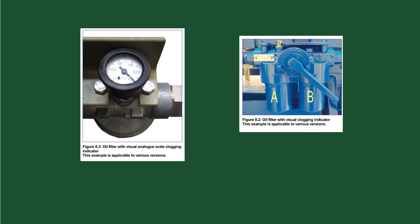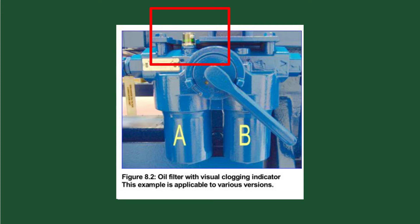M2 and M6 filter housings are equipped with a visual clogging indicator. Under normal operation, the indicator will show a green display. If the indicator displays red, then the oil filter resistance is too high and needs to be replaced immediately.